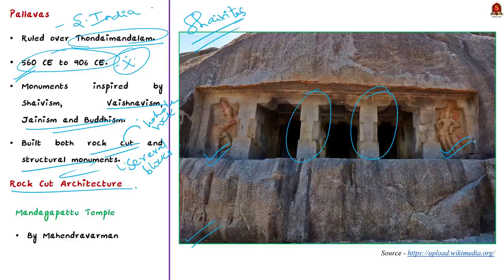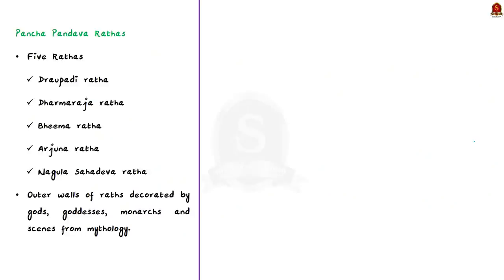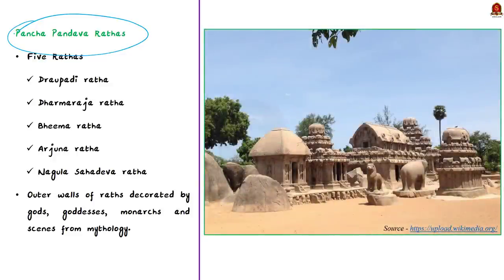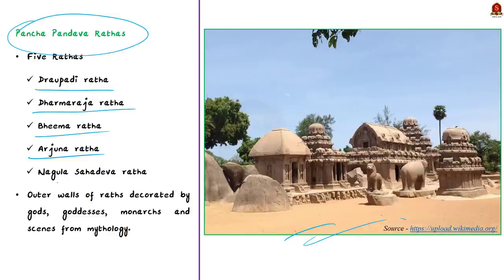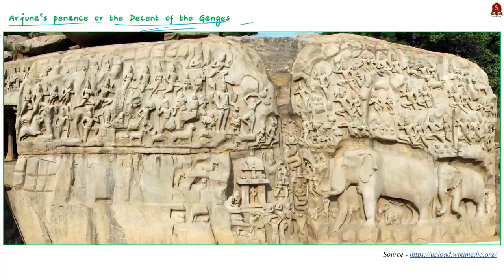The next famous rock cut architecture of this period is the Pancha Pandava Rathas. The Tamil Dravidian tradition of rock cut monuments is perfectly illustrated by these five Rathas: Draupadi Ratha, Dharmaraja Ratha, Bhima Ratha, Arjuna Ratha, and Nakula Sahadeva Ratha. The outer walls of the Rathas, especially Arjuna, Bhima, and Dharmaraja, are decorated with various motifs. The main motif being mythology, and sculptures of gods, goddesses, monarchs, and scenes from mythology decorate the outer walls.